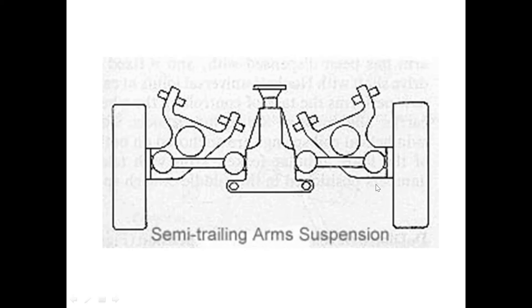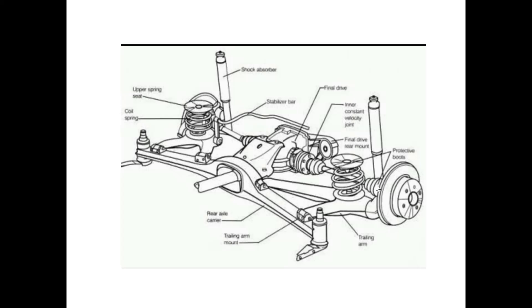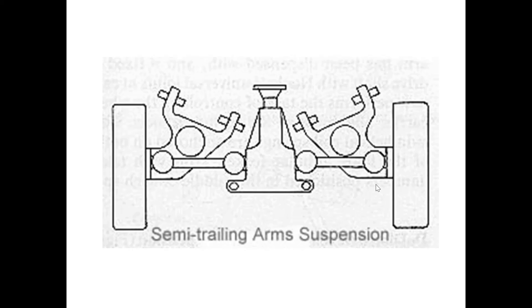We have already said that there is no difference in the arms. This is the semi-trailing arm suspension system shown in a rear view. This includes a shock absorber. This is the semi-trailing arm suspension system.